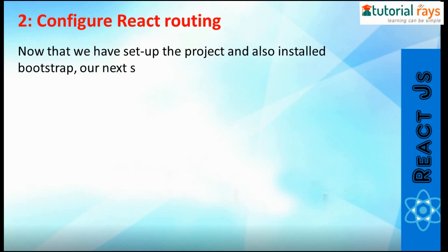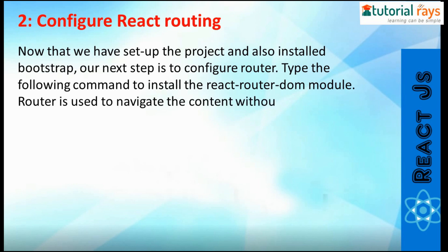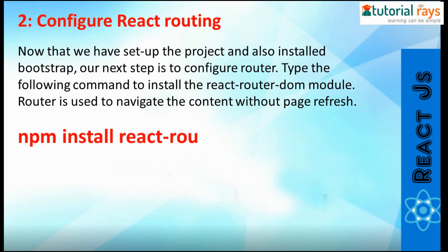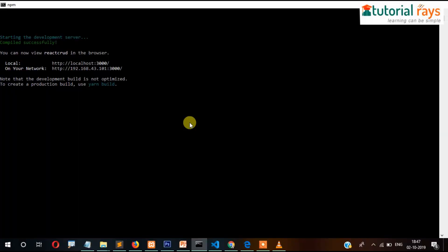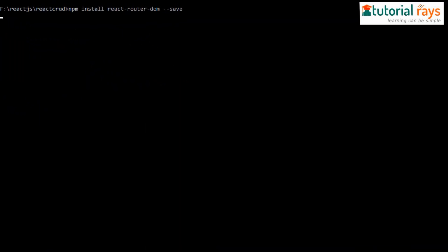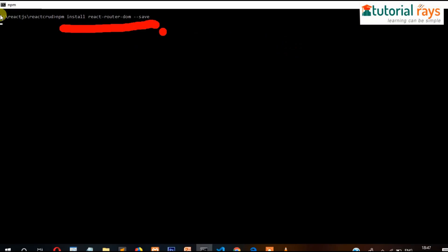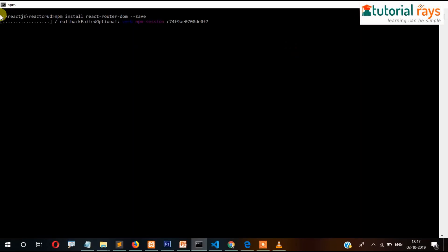Now that we have set up the project and installed the dependencies, our next step is to configure the router. Type the following command to install the react-router-dom module. Router is used to navigate content without page refresh. The command is: npm install react-router-dom --save. Let's press Ctrl+C, then cls, and run this command. Let's wait for the installation to complete.